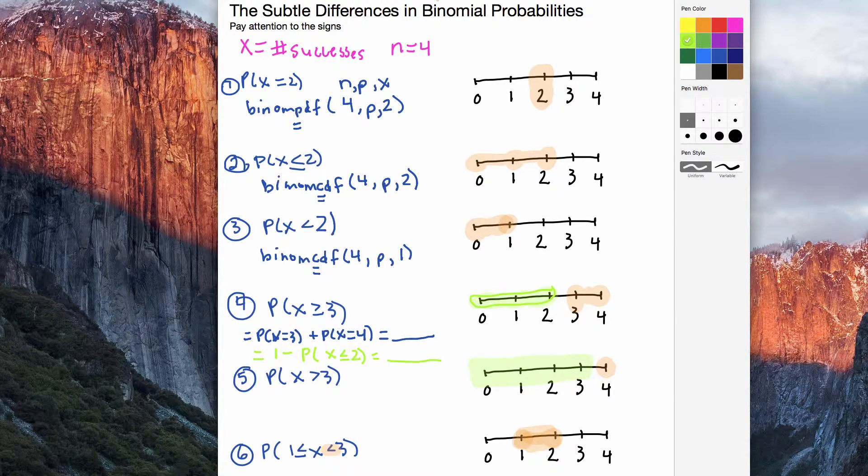So while I could calculate the probability of, equals the probability that x equals 4, that's a direct way. And maybe it's not too complicated, actually, on your calculator, because it is only one probability.